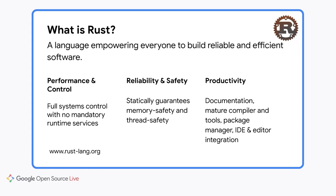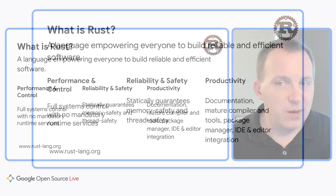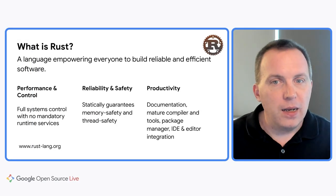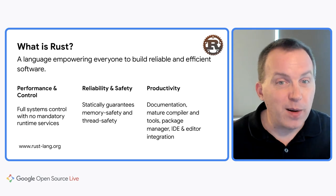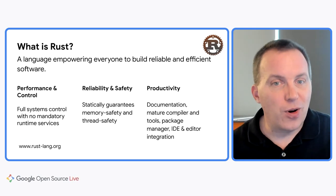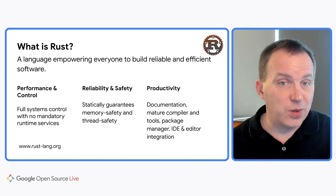If you're here, you've probably already heard about Rust — a new programming language designed around three big pillars. First, it provides the full performance and control you need to write systems programs that are in direct control of hardware resources. Second, it provides safety from a variety of errors around the misuse of memory or concurrent thread execution. And finally, it has a modern take on providing mature documentation and tooling around all aspects of the language and its ecosystem.